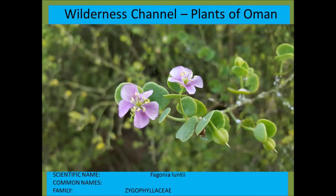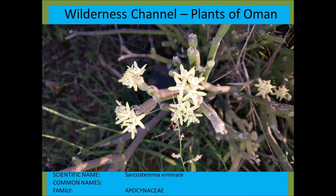Fagonia luntii is similar to Fagonia ovalifolia — another purple-flowered Fagonia species. Sarcostemma viminale in flower — the bush that photosynthesizes through the stems and modified leaf petioles, but has no leaves.